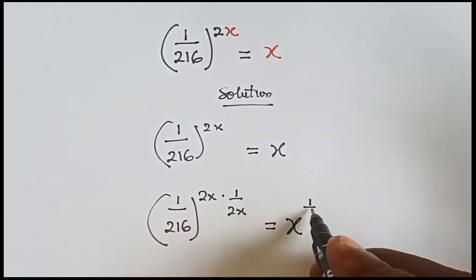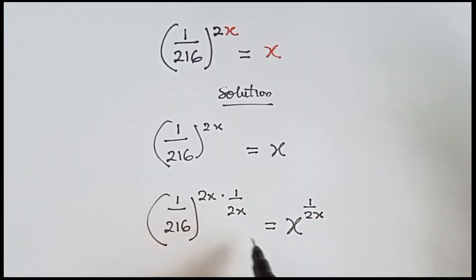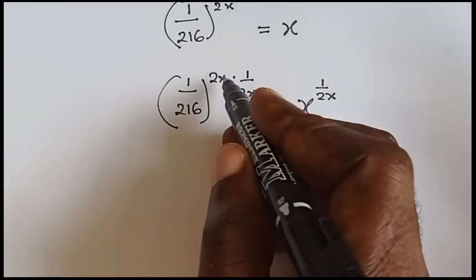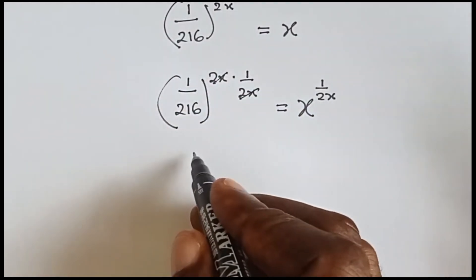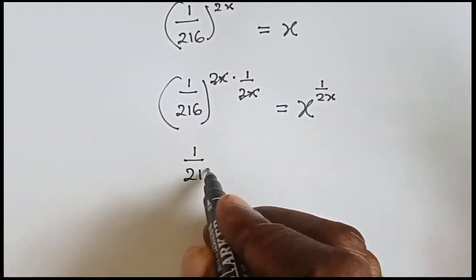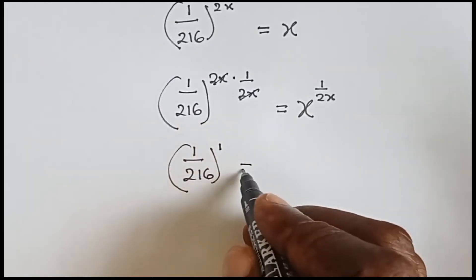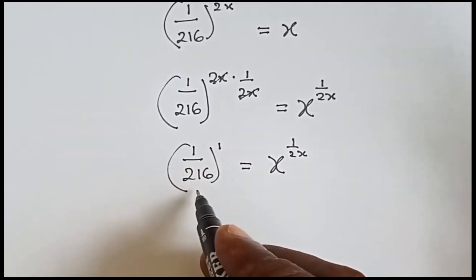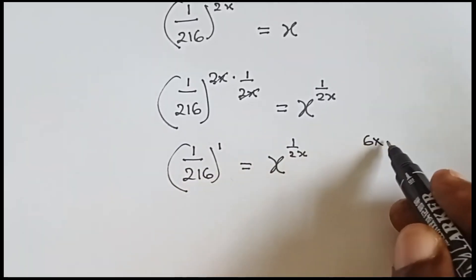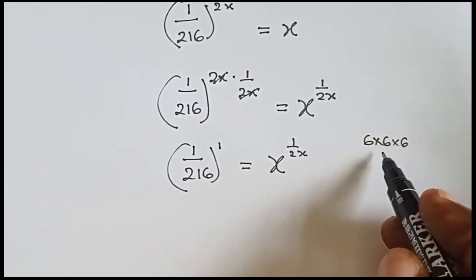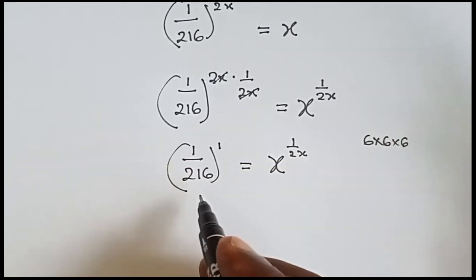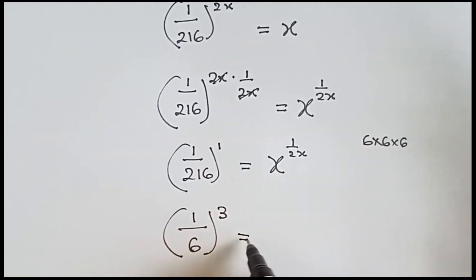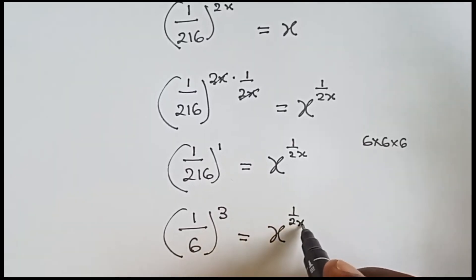We also multiply this side with 1 over 2x — whatever we do to one side, we do to the other. Now let's cancel out the 2x. We have 1 over 216 raised to the power 1, and then we have x raised to the power 1 over 2x. Now 216 is a perfect cube, because 6 times 6 times 6 gives us 216. So we can write this as 1 over 6³ equals to x raised to the power 1 over 2x.